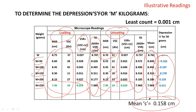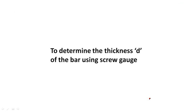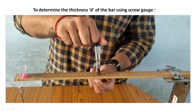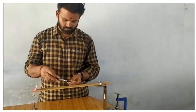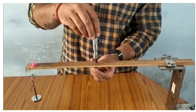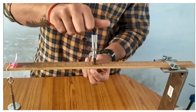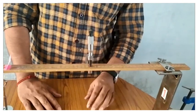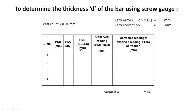After the main tabular column, you have to go for the determination of the thickness of the bar using the screw gauge experiment. You have to hold the screw gauge as shown in this picture. This is a video illustration on how to hold the screw gauge on the bar to find out its thickness. Note down the PSR value and HSC value, from which HSR can be calculated: HSR equals HSC multiplied by least count, then find the observed reading and correct reading.